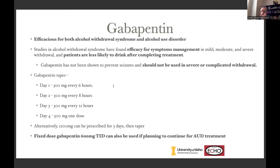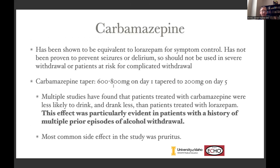I want to emphasize that gabapentin has not been shown to prevent seizures. So if somebody is at risk for seizures, they should not be on gabapentin or carbamazepine — they should be on a benzodiazepine. Carbamazepine is very equivalent to gabapentin in the studies, with less rebound drinking. It's dosed at 600 to 800 mg on day one, then decreased by 200 mg per day until tapered off. The most common side effect is itching. I prefer gabapentin over carbamazepine because you can continue the gabapentin, but carbamazepine is evidence-based and in the guidelines.